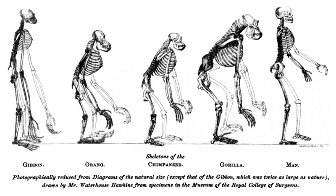Selective breeding was established as a scientific practice by Robert Bakewell during the British Agricultural Revolution in the 18th century. Arguably, his most important breeding program was with sheep. Using native stock, he was able to quickly select for large, yet fine-boned sheep, with long, lustrous wool. The Lincoln Longwool was improved by Bakewell, and in turn the Lincoln was used to develop the subsequent breed named the New, or Dishley, Leicester. It was hornless and had a square, meaty body with straight top lines. These sheep were exported widely, including to Australia and North America, and have contributed to numerous modern breeds, despite the fact that they fell quickly out of favor as market preferences in meat and textiles changed.